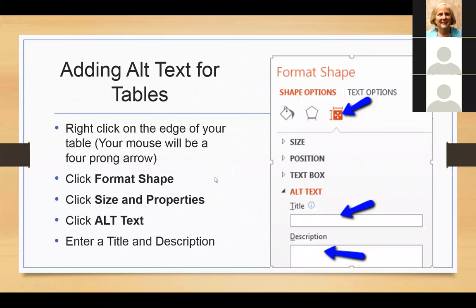This is the alt text area. If you right-click on the four-prong arrow, it brings you into the option to format the shape, and you go to Size and Properties to set up the alt text. Tables hopefully won't need too much explanation — hopefully the table pretty much speaks for itself. I would recommend running a screen reader on a table to see if it actually does what you think it should be doing.